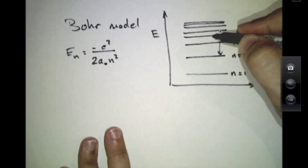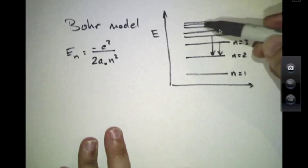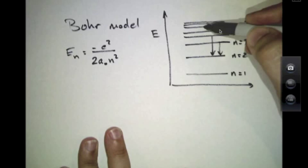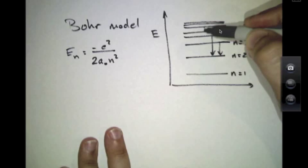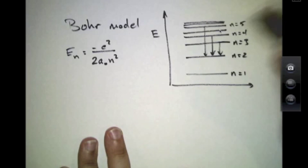Or there are electron transitions from n equals 4 dropping down to n equals 2. Or there are atoms in which the electron is sitting out here at n equals 5 and dropping down to n equals 2.